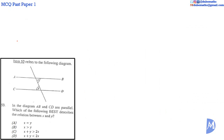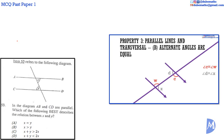Question 53. When two parallel lines are cut by a transversal, alternate angles are equal. X and Y are alternate angles. The answer is A.